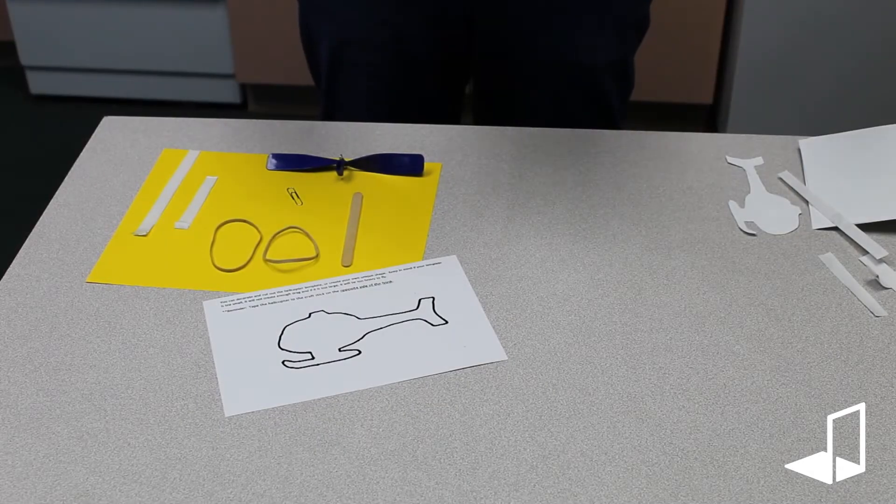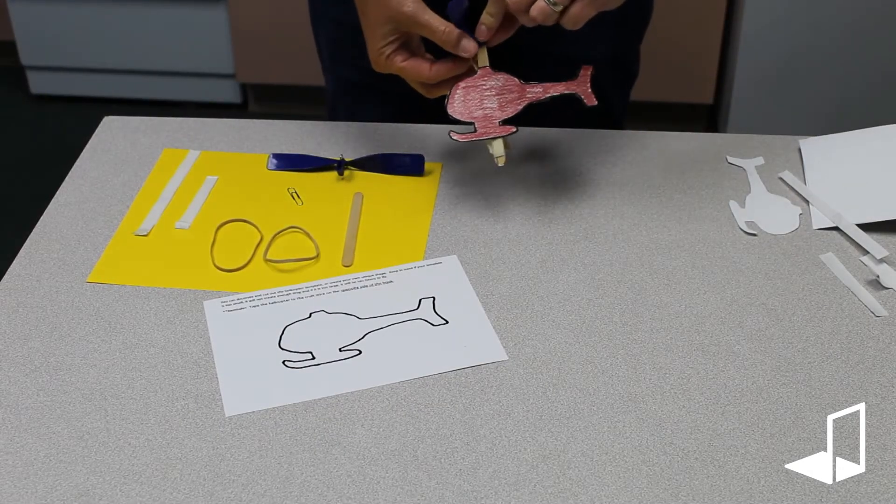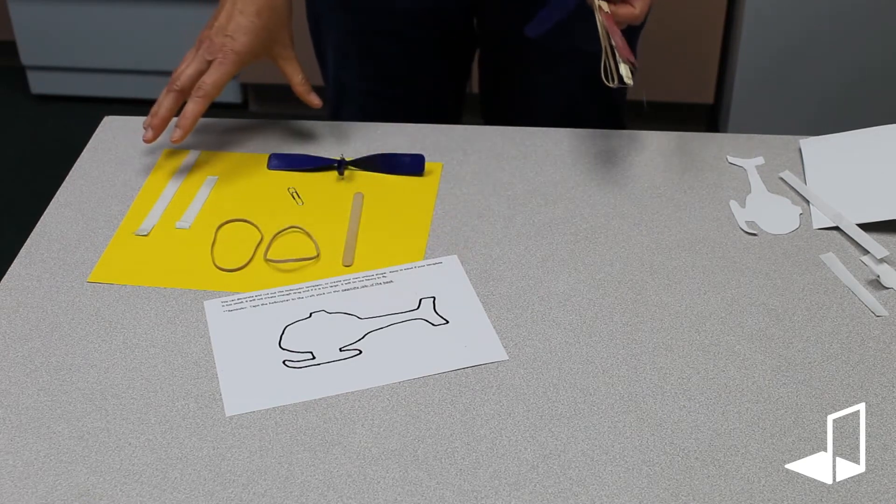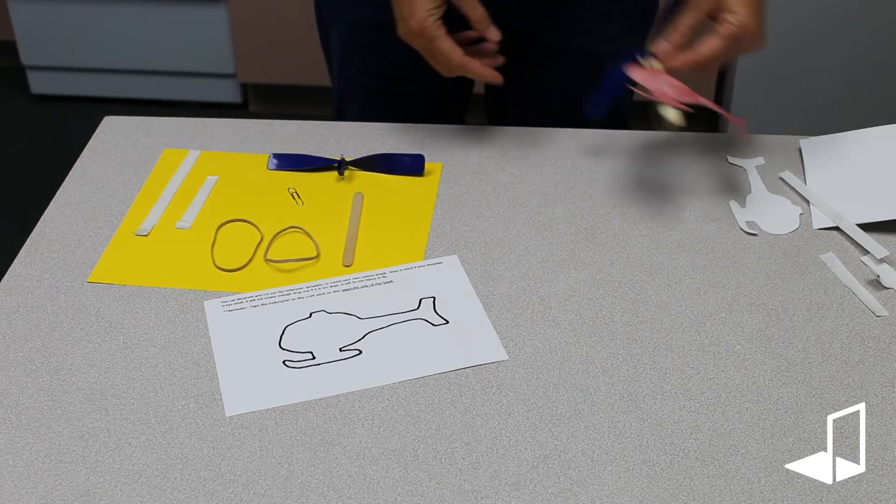So today we're going to be making a rubber band helicopter. This is what the final product looks like, and this is what you're going to get in the kit to make your own rubber band helicopter.